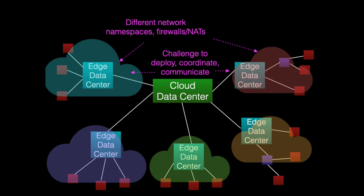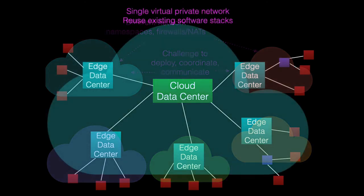This creates significant challenges to deploy, coordinate, and communicate among the edge devices that form a platform. With a virtual private network, you have a single virtual address space. You can reuse existing software and applications, and that greatly facilitates the deployment of edge computing systems.